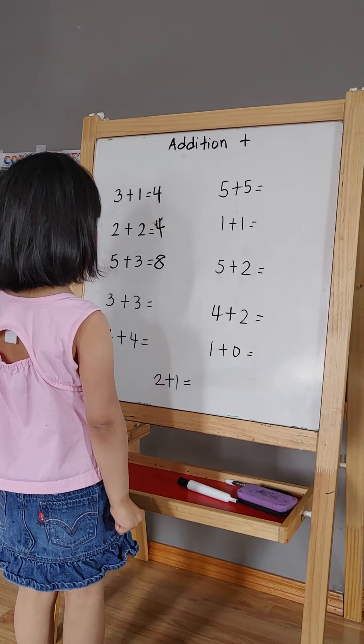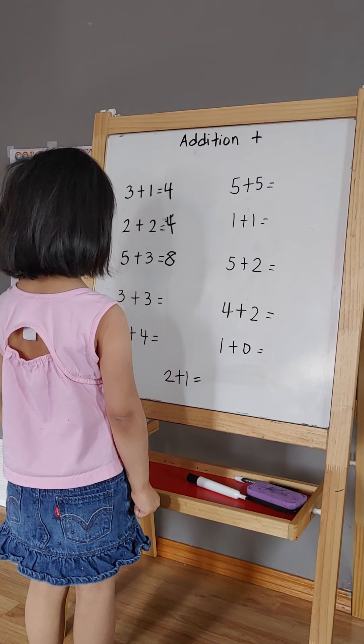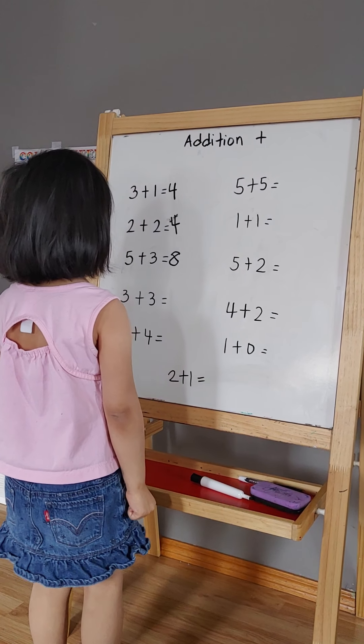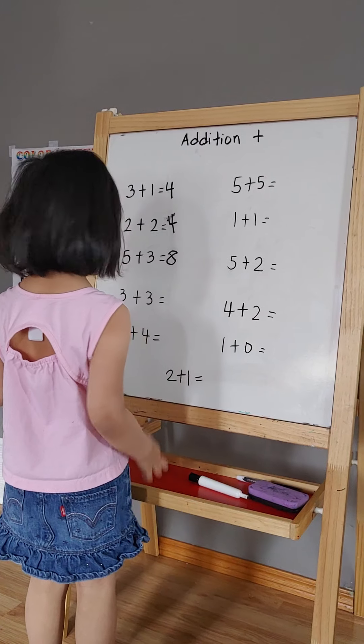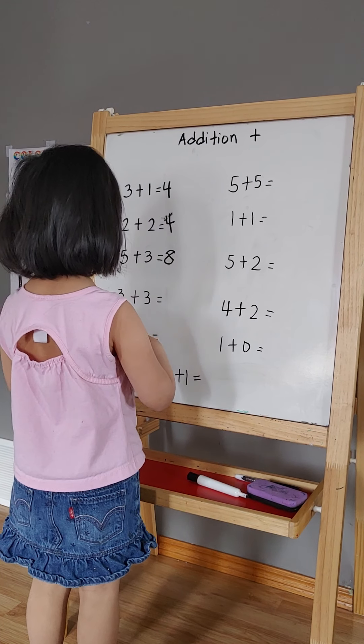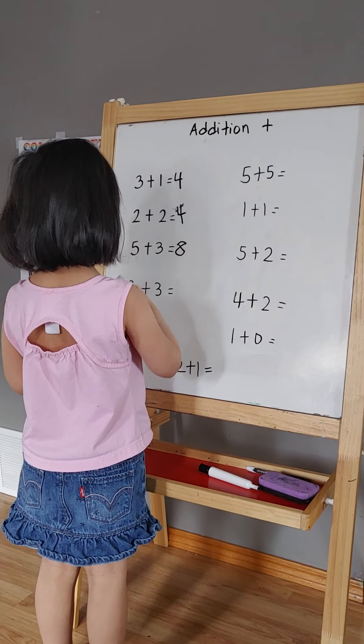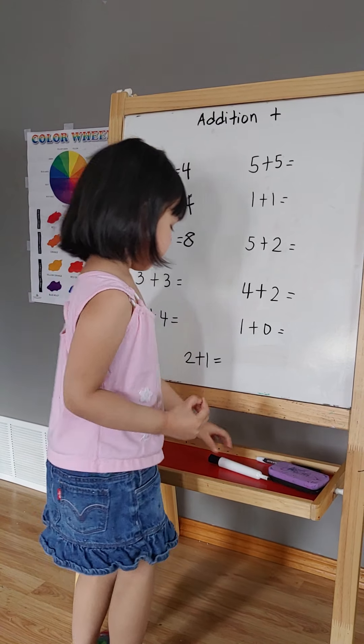3 plus 3. So put 3 on my finger and put 3 on my finger. Count them. 1, 2, 3, 4, 5, 6.